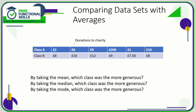For Class A, we add up two plus six plus five plus two hundred plus one plus ten, which comes to two hundred and twenty-four, divided by six. So for Class A, the mean is £37.33. For Class B, that's eight plus ten plus twelve plus nine plus seven fifty plus eight, divided by six, which comes to £9.08.